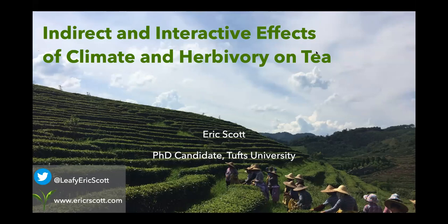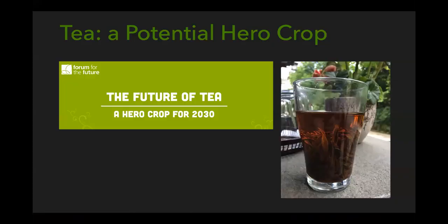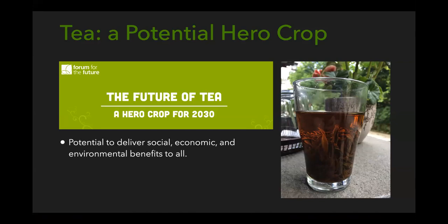Tea is important because it's grown in regions of the world that are really feeling the effects of climate change hard. Climate change has the potential to affect tea directly through changes in temperature or increases in drought and flooding. But it also has the potential to affect tea indirectly, because it can alter the populations of insects that feed on tea.